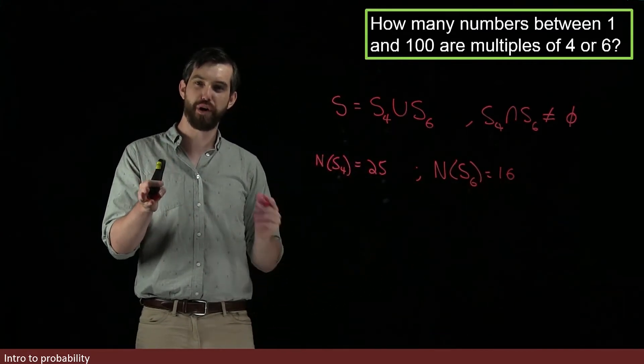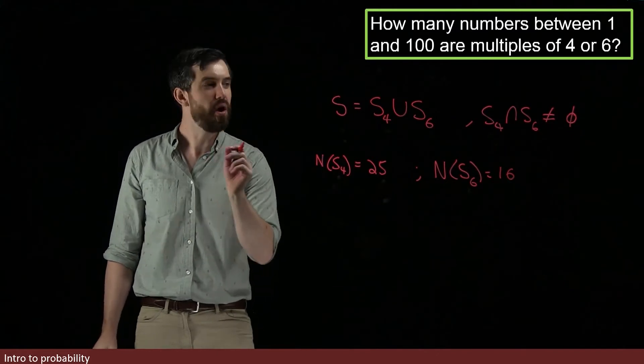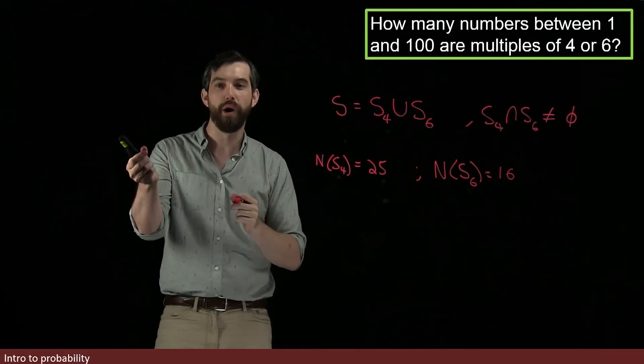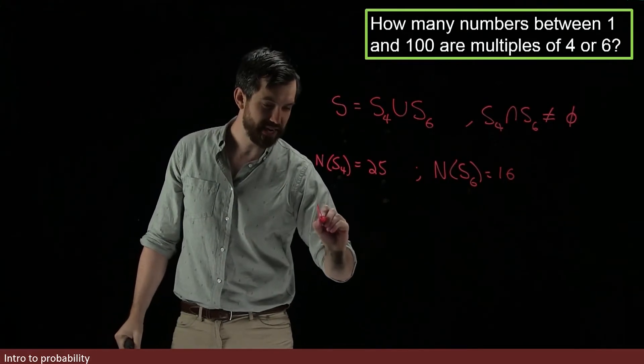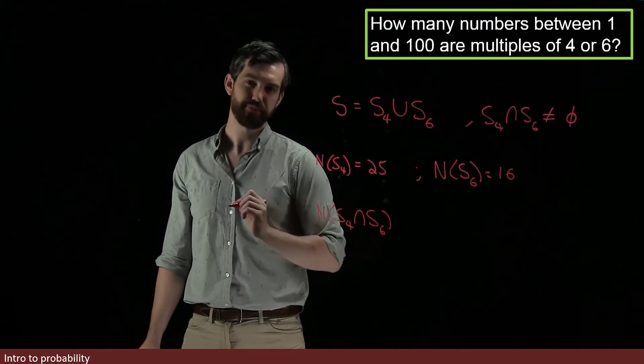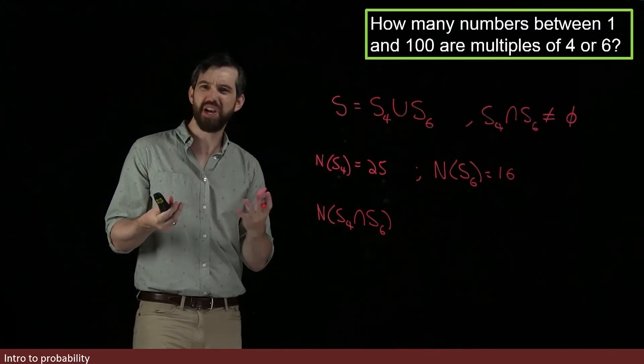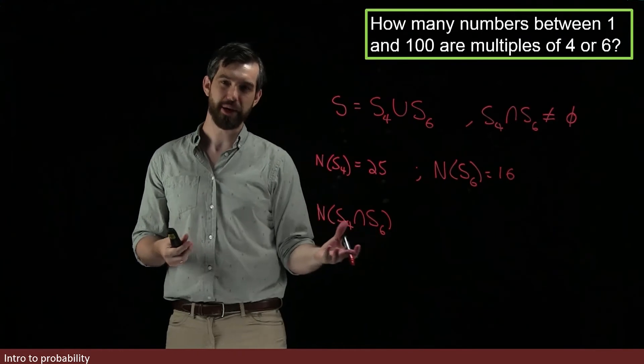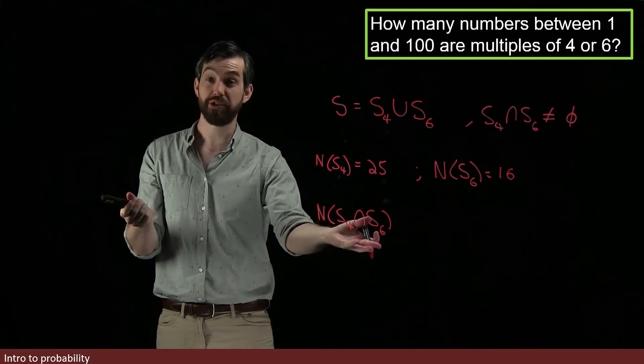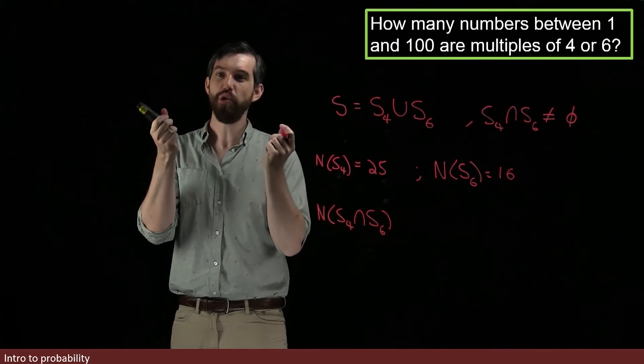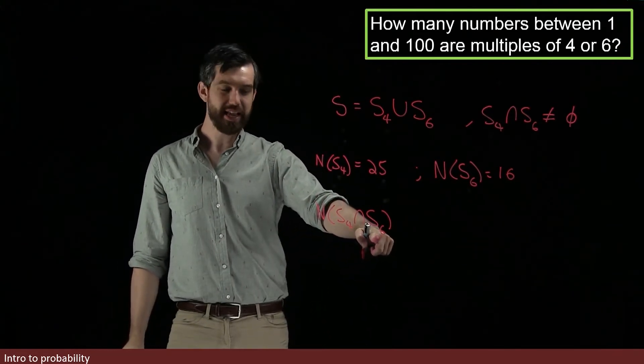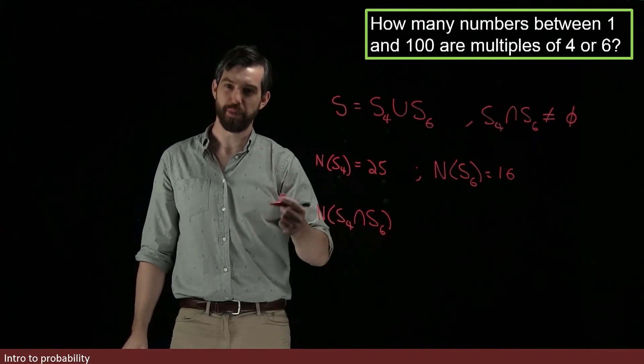The number of multiples of 4 was 25. The number of multiples of 6 was going to be 16. But the final thing we needed to do for our formula was to figure out how many are there in the intersection? How many are there that are multiples of both 4 and 6? I want to compute the number in S4 intersect S6. First of all, I'm going to try to think about what is this intersection? Well, if you're a multiple of 4 and you're a multiple of 6, that's what it means to be an intersection, that you've got both properties, then you're going to be a multiple of 12. So, in other words, S4 intersect S6 is all of the different multiples of 12.